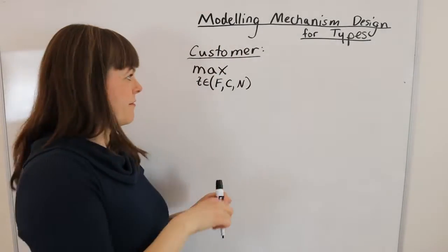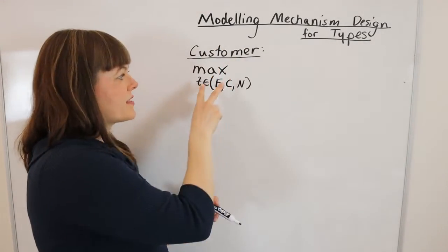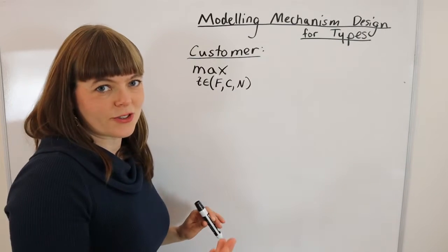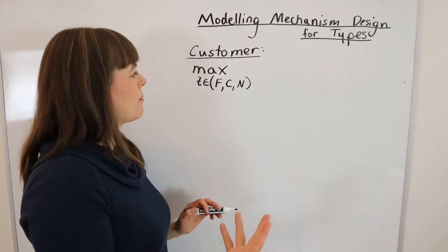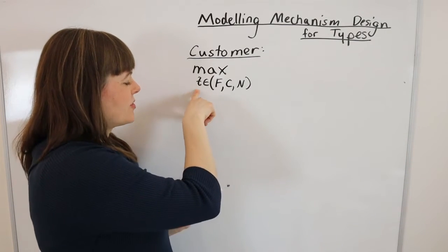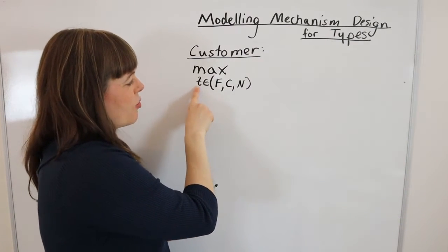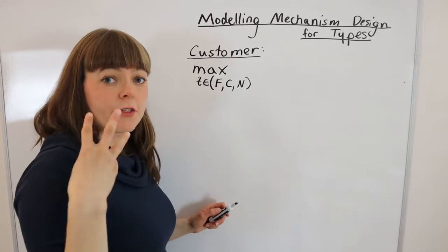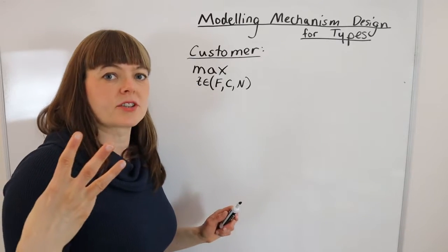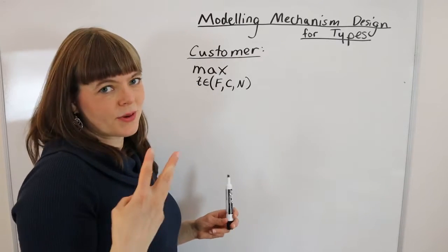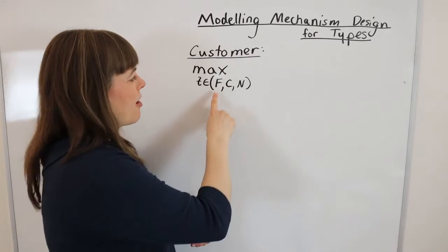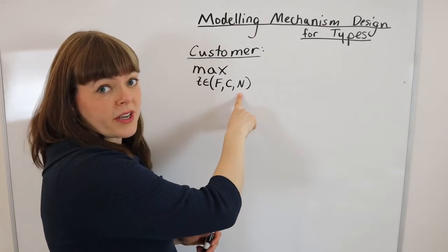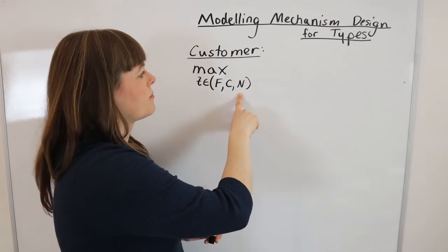The first step is figuring out what the customer is choosing. Their choice variable is their ticket, which comes from a set of three options: a first-class ticket, a coach ticket, or no ticket at all.